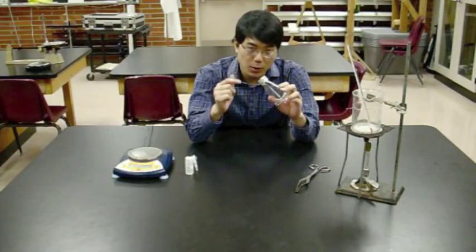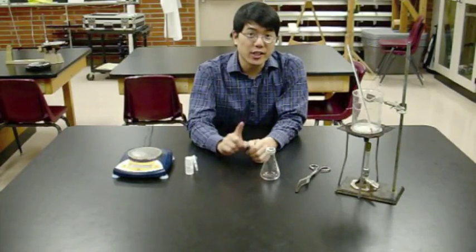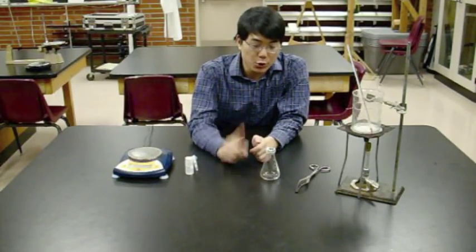That's your Dumas tube: Erlenmeyer flask, aluminum foil cap, rubber bands around the edge. Before you go any further, there's an absolutely essential thing to do.